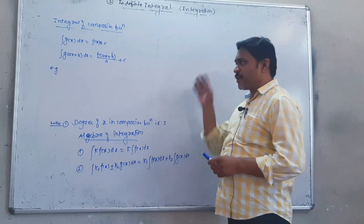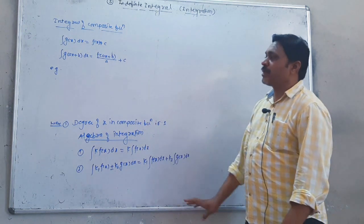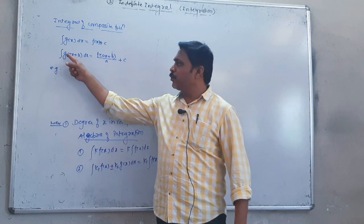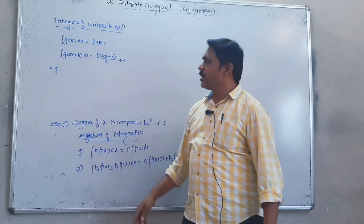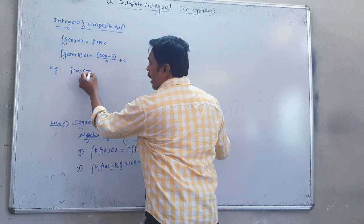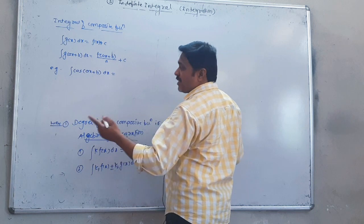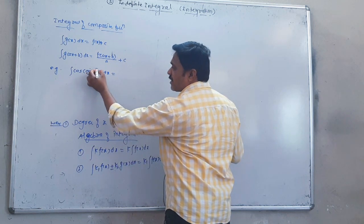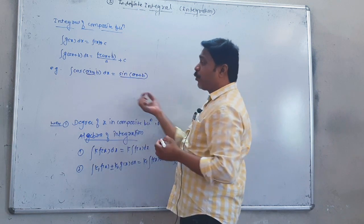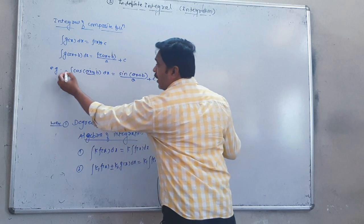Now, integral of a composite function. Integration of a composite function: the opposite definition is integral of g of x dx equals f of x plus c. We can say that integral of g of ax plus b dx equals f of ax plus b upon a plus c.